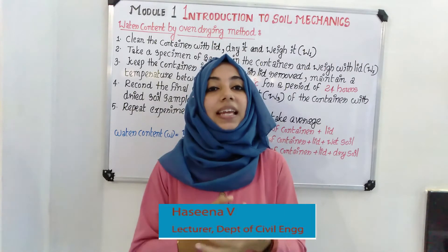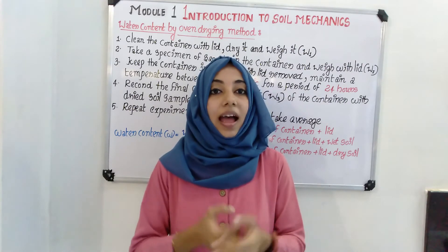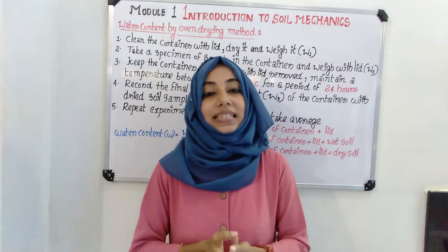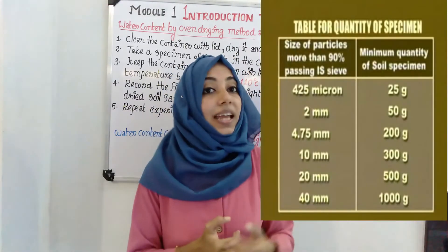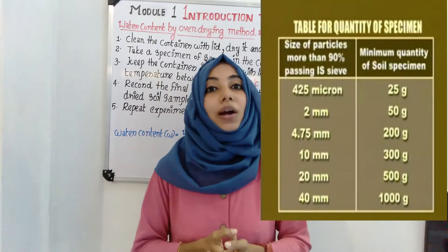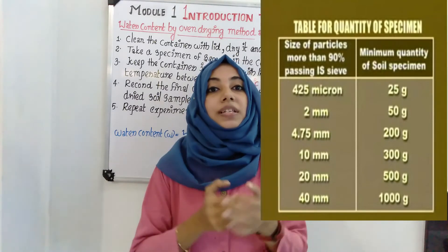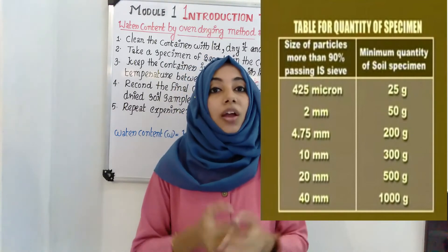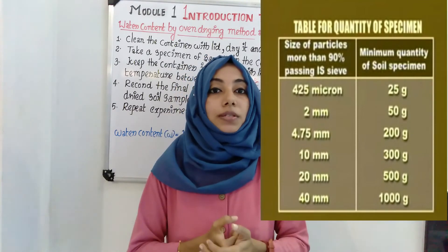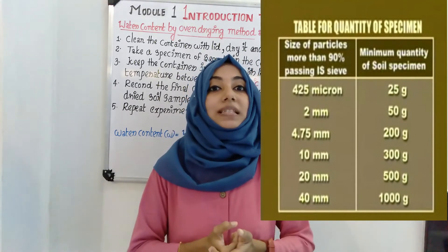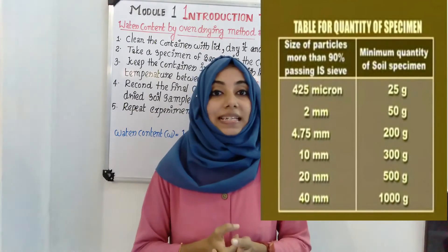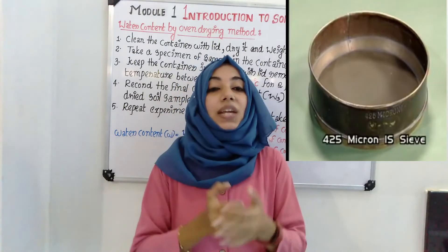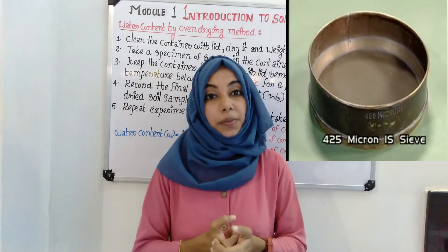The second step is to take the soil specimen from the sample, fill the container, and take the weight with lid, termed as W2. A minimum quantity of soil sample is specified: if 90% of soil passes through a 425 micron IS sieve, take a minimum of 25 grams; if 90% passes through a 2 mm IS sieve, take 50 grams.